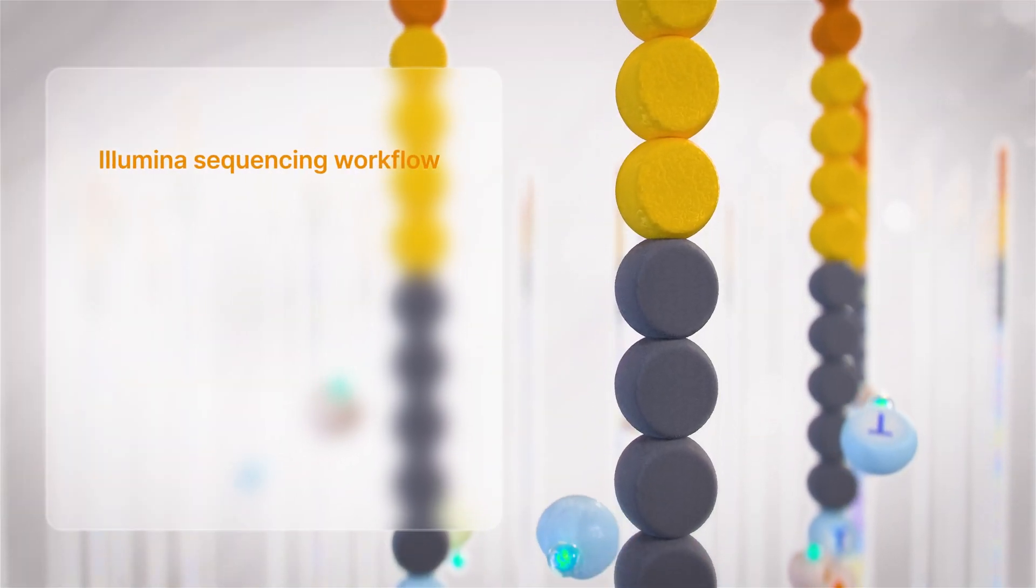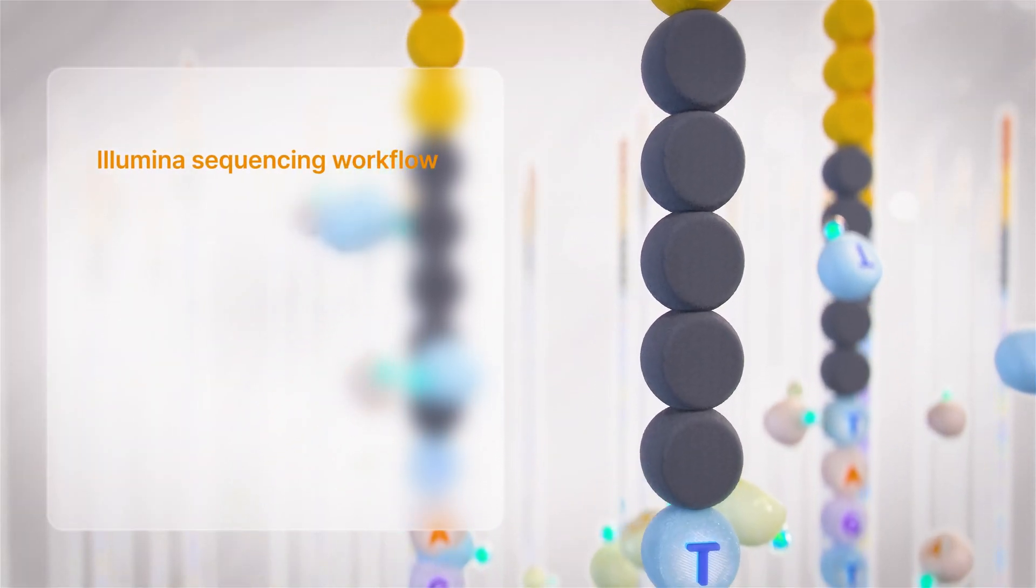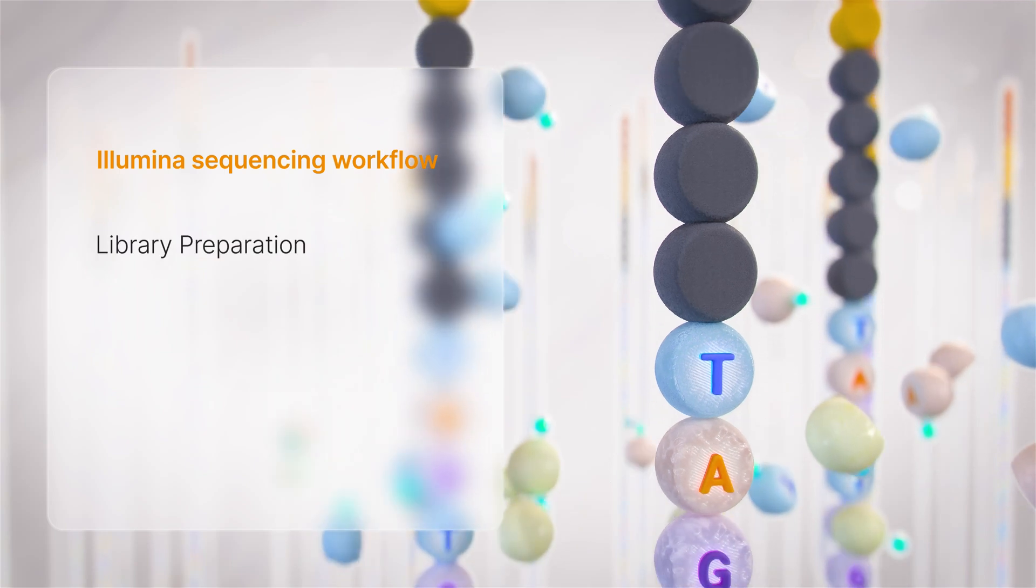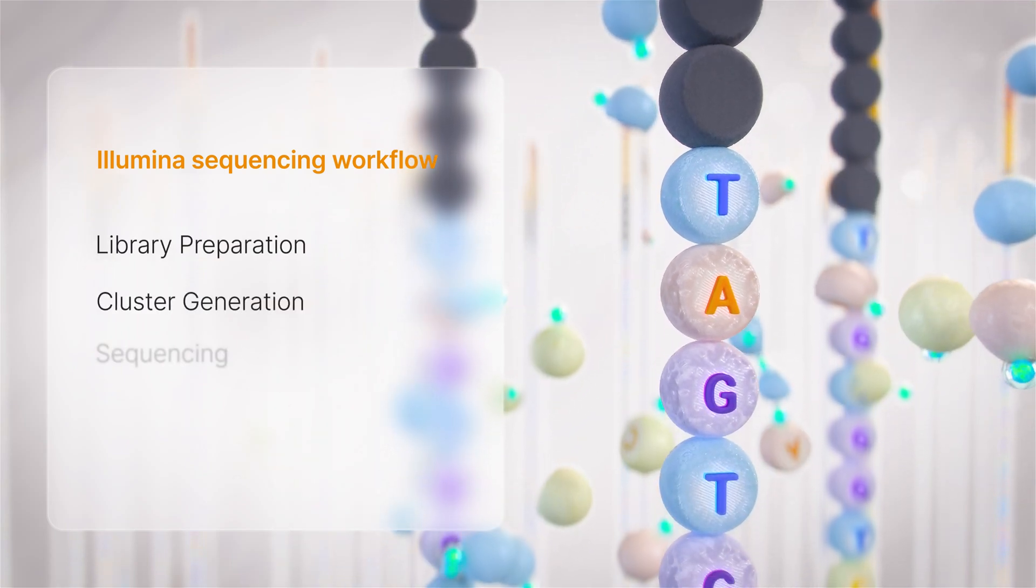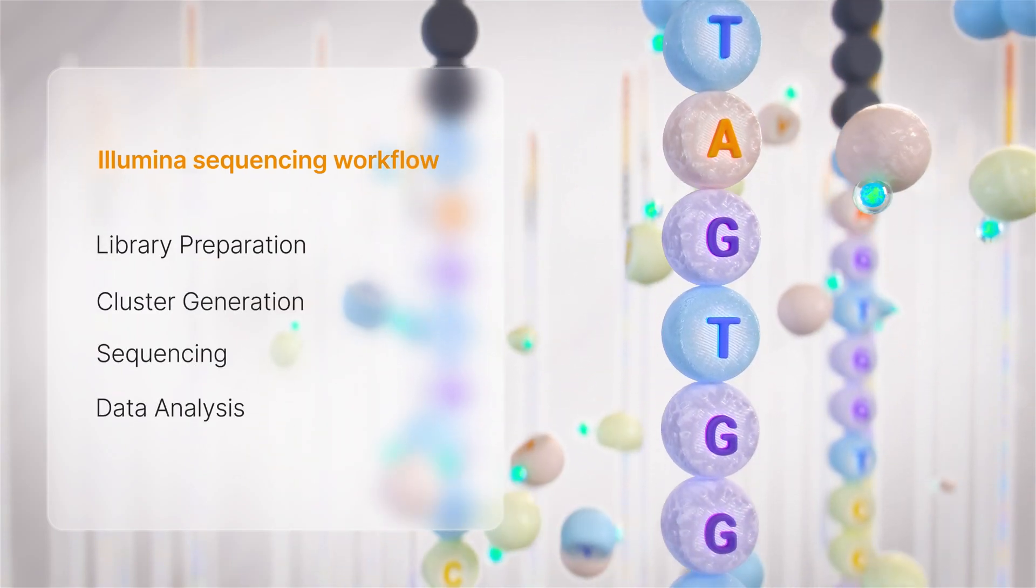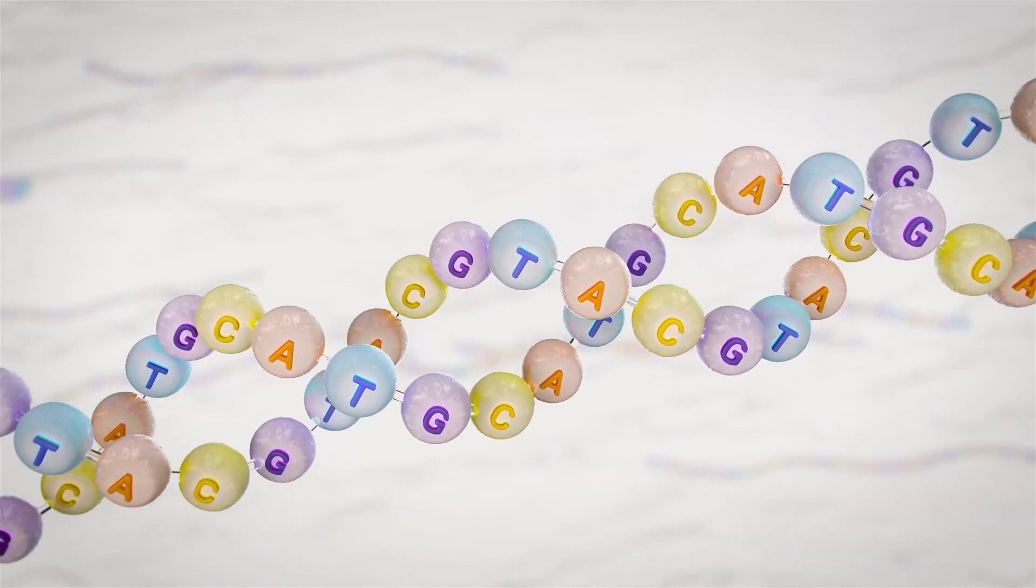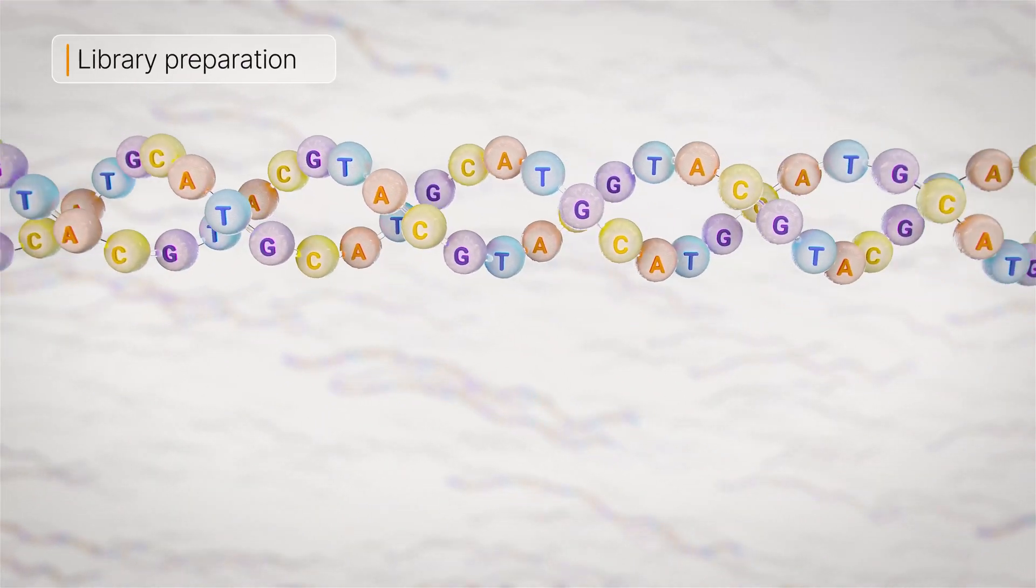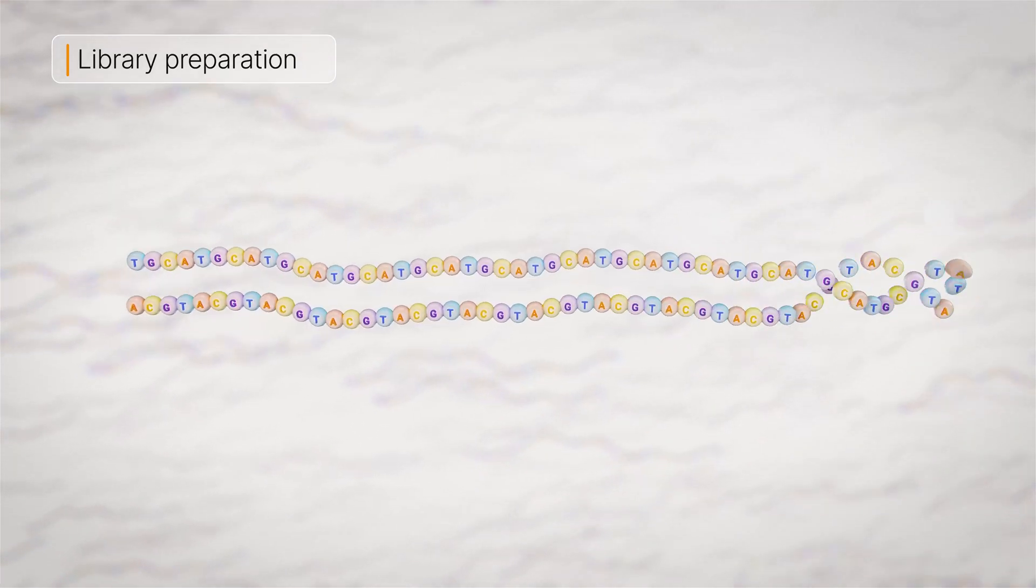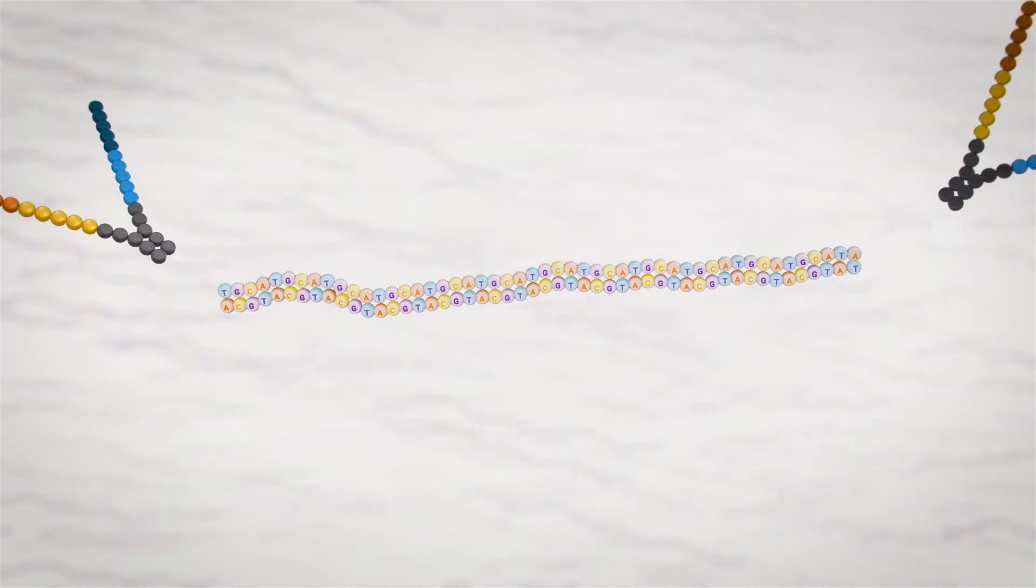The Illumina sequencing workflow is composed of four basic steps: library preparation, cluster generation, sequencing, and data analysis. There are many ways to prepare libraries based on sample input type and sequencing application. All library preparation methods add adapters to the ends of the DNA fragments.